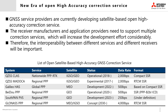GNSS service providers are currently developing satellite-based open high accuracy correction services, having centimeter to decimeter level positioning accuracy based on PPP or PPP-RTK. Some services such as QZSS PPP-RTK and PPP are already in operation now, and others such as Galileo HAS will be available soon.